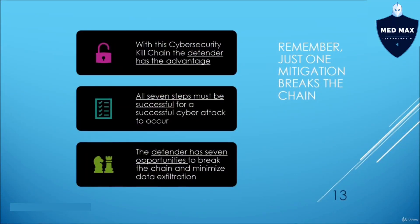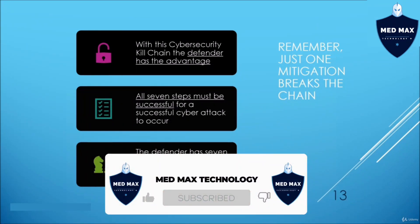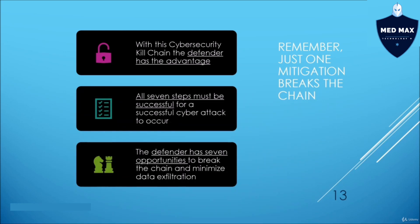There are some potential flaws with the cyber kill chain model. One assumption is that the hacker has to go through every single phase, but in reality that's not always the case — a hacker could get all usernames and passwords directly from publicly available information due to other data breaches and immediately gain access to accounts. Another assumption is that all seven steps must be successful for a cyber attack to occur, but attackers can morph their approach once they have credentials. On the positive side, the defender has seven opportunities to break the chain and minimize data exfiltration — giving the blue team a real advantage in stopping the attacker from completing the full cyber attack chain.